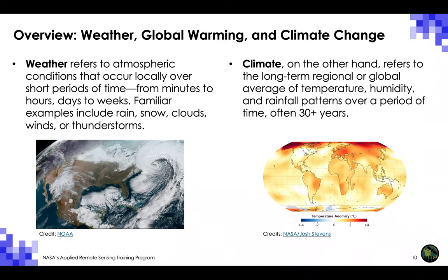Just as we can describe regional climate, we can also describe the climate of the entire planet. Global climate is a description of the climate of a planet as a whole, with all of the regional differences averaged.